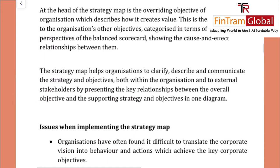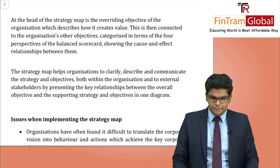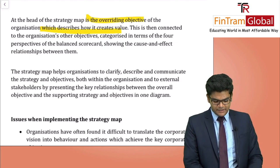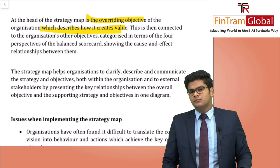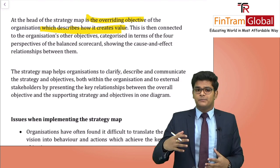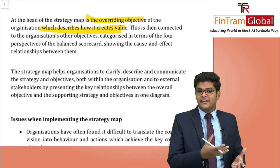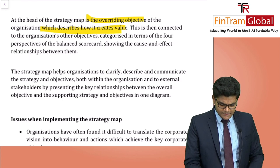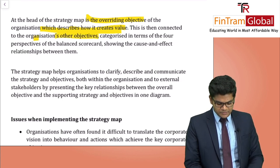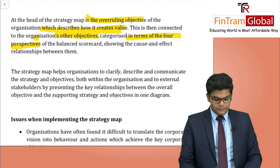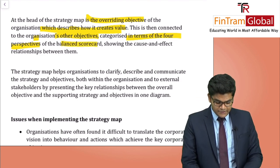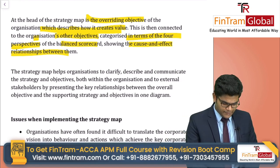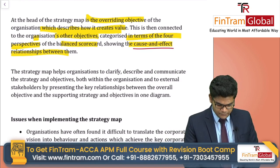The head of the strategy map is the overriding objective, describing how the organisation creates value. This is then connected to the organisation's other objectives categorised in terms of the four balanced scorecard perspectives, showcasing the cause and effect relationship. Cause and effect basically means there is a reason behind something happening.